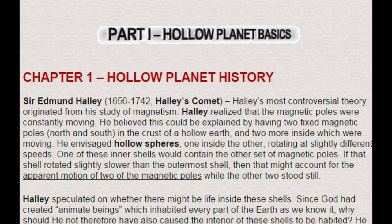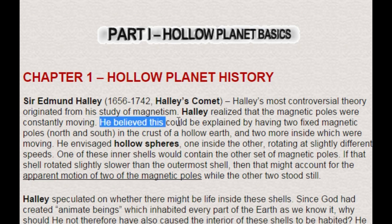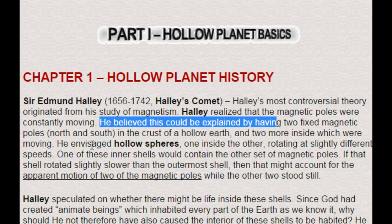Part 1: Holoplanet Basics. Chapter 1: Holoplanet History. Sir Edmund Halley (1656–1742), of Halley's Comet fame. Halley's most controversial theory originated from a study of magnetism. He realized that the magnetic poles were constantly moving, and believed this could be explained by having two fixed magnetic poles — north and south — in the crust of a hollow Earth, and two more inside which were moving.